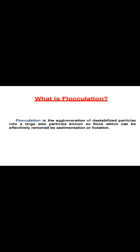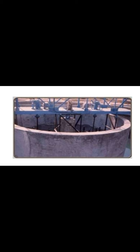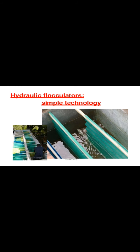Flocculation is generally the agglomeration of destabilized particles into large size particles known as flocs, which can be removed by sedimentation or flotation. Mechanical flocculators are used, including cross-flow flocculator sections. Hydraulic flocculators are also provided in water treatment plants — horizontal baffle tanks where water flows horizontally, with baffle walls creating turbulence to facilitate proper mixing.